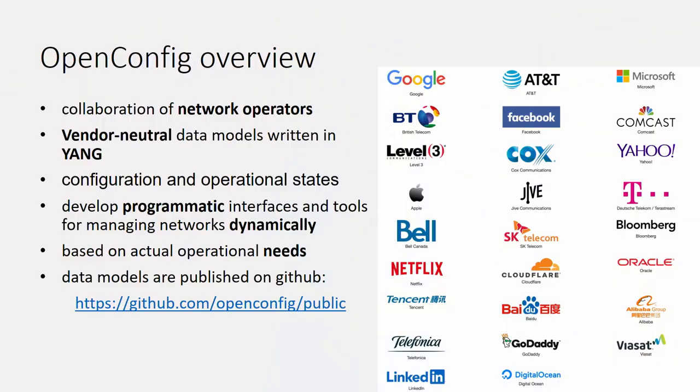OpenConfig is an initiative from network operators. In the beginning, Google was the main driver. The idea is to have vendor-neutral data models, because today for every vendor you have to learn a language and integrate it into your NMS, OSS, and BSS systems. That costs a lot of money and time. If you want to change from vendor A to vendor B, it is even more complex and costly.